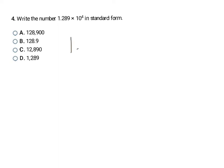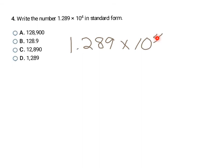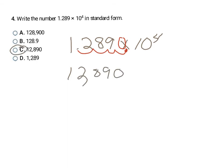Now they're giving us a number in scientific notation and asking us to write it in standard form. The exponent is positive 4, which means I need to move the decimal four times to create a bigger number. To create a bigger number, I move it to the right: one, two, three, and then four — I fill in a zero there. So my final answer is 12,890, which is letter C.